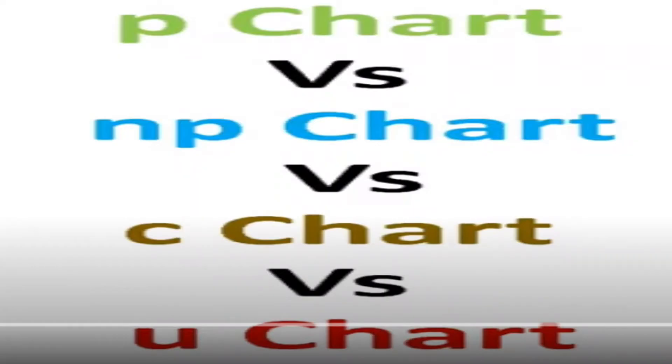I am again back with a very interesting topic. What are the different types of attribute control charts: P, NP, C, and U.